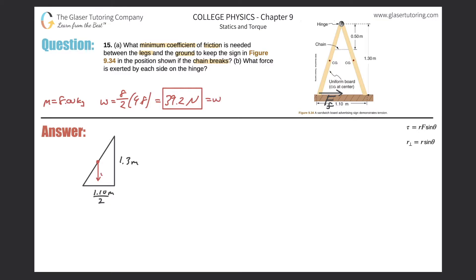There are now three forces: the weight, the normal force pointing upward (equal in magnitude to the weight, which I'll call F_N), and a horizontal frictional force pointing inward, which I'll call F_f. Taking the hinge as the axis of rotation, I need to look at this problem in terms of torques — because I don't know the horizontal component at the hinge either, so I can't just use sum of forces. I have to use sum of torques, just like in the prior problem.